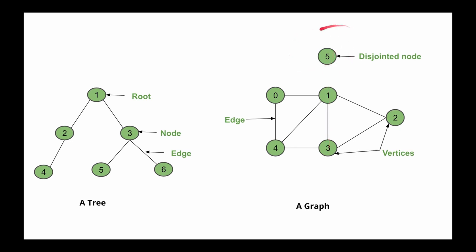Like node 5, a tree, which is a special type of graph, has a special node called the root node — the very first node of that tree. Every other node in a tree will have only one parent node except the root node. There is only one path from the root node to any other node. From node 1, which is our root node, we have exactly one path to node 5: moving from node 1 to node 3 and then to node 5. An edge is simply the line connecting two nodes.